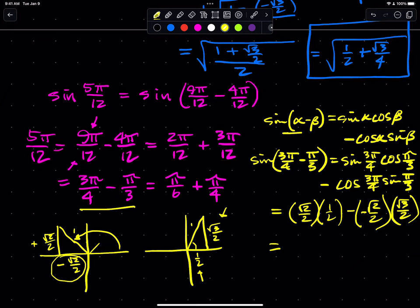So then when I multiply the first two factors, I get square root of 2 over 4. And when I multiply the second two factors, I get negative square root of 6 over 4, which is square root of 2 over 4, minus minus, minus a negative, that's going to be plus square root of 6 over 4. And this can be merged.